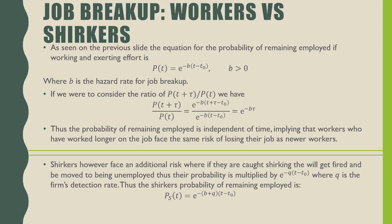As seen on the previous slide, the equation for the probability of remaining employed if working and exerting effort is the following. If we consider the ratio of these two equations, where we have the probability of keeping your job at t plus tau over p(t), we get e — the number e — raised to the power of b times tau. Thus, the probability of remaining employed is independent of time, implying that workers who have worked longer on the job face the same risk as workers who are newer on the job.